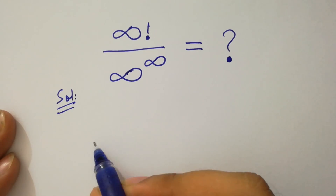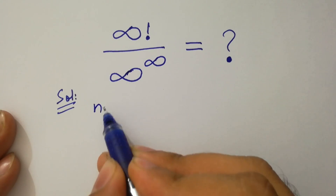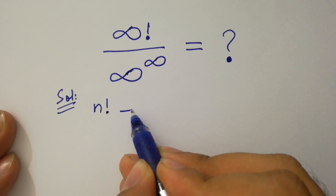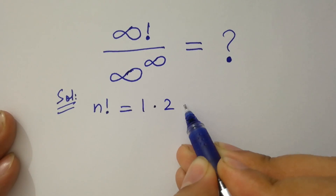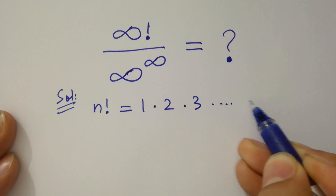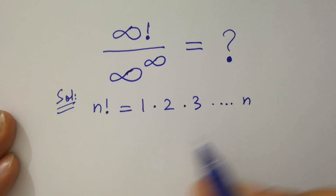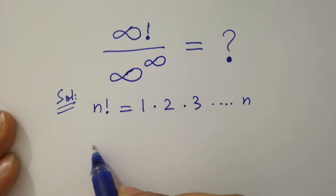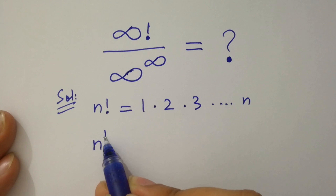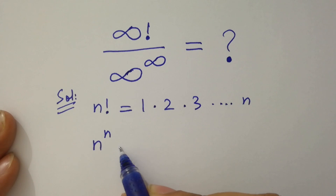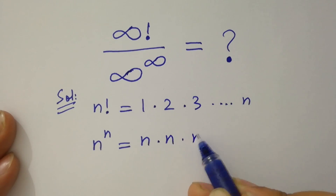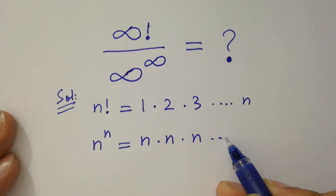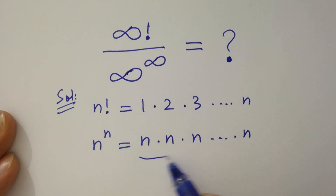As we know, n factorial is equal to 1 · 2 · 3 · ... · n. And n to the power n is equal to n · n · n · ... up to n times.